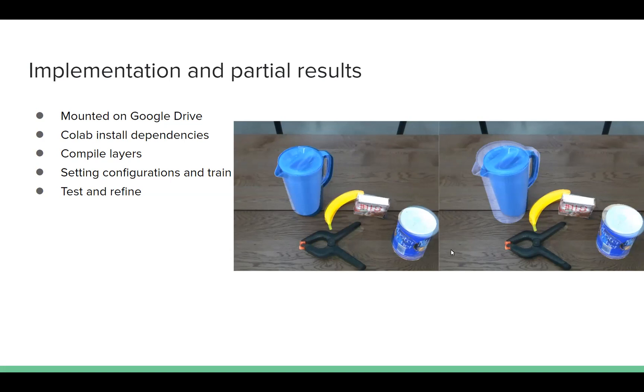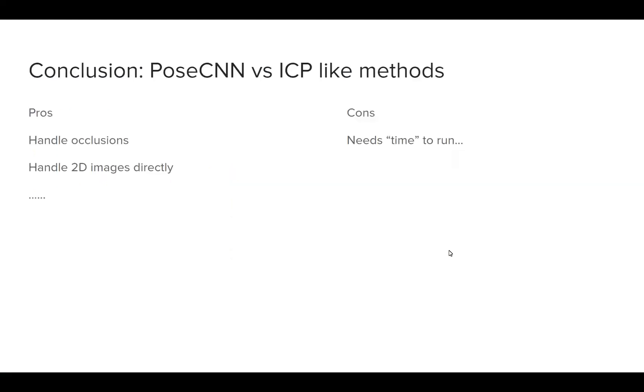Nevertheless, we can see that PoseCNN is already a great and robust method that can handle occlusions in the images and other problems.